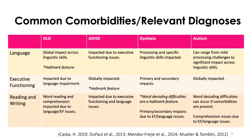With both DLD and ADHD, you're going to have to think about language, executive functioning, and literacy. But where you focus depends on the hallmark characteristic. With DLD, language may be your primary priority. With ADHD, it might make sense to focus a little on language but emphasize more of those executive functioning skills.